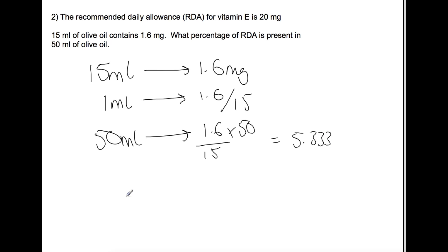But we want to know what it is as a percentage. So the recommended daily allowance is 20 milligrams. So if we take the value that you get from 50 milliliters divided by the recommended daily allowance and then times by 100, we find that this is 27% of the recommended daily allowance.